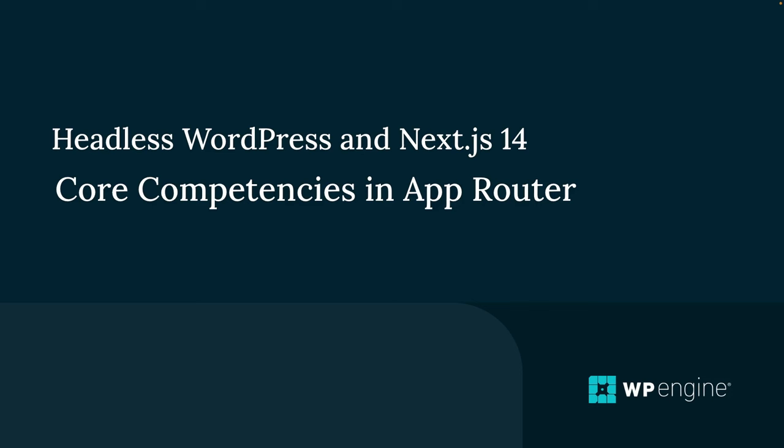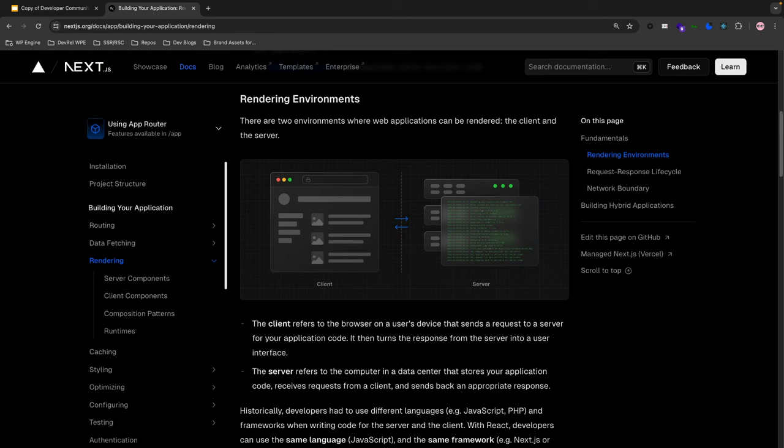Hello everyone and welcome to another video by Fran Agulto on the headless developer relations team at WP Engine. In this video we're going to go over the headless WordPress and Next.js 14 core competencies in the app router. The app router in Next.js 14 allows you to use React's latest features such as server components and streaming. Combining this with headless WordPress can be daunting, especially with the latest features and how the rendering methodology fits together in certain use cases.